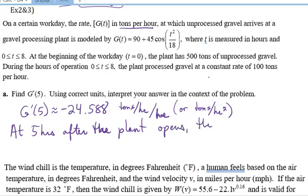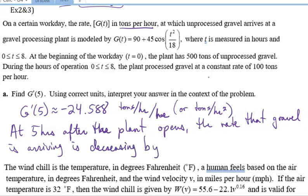the rate that gravel is arriving is, and again, this is negative. So I'm going to say decreasing by 24.588 tons per square hour. And I do have a rate of change of rate. So I'm saying that the rate is decreasing. So that's a rate of change of rate, which is what we have.